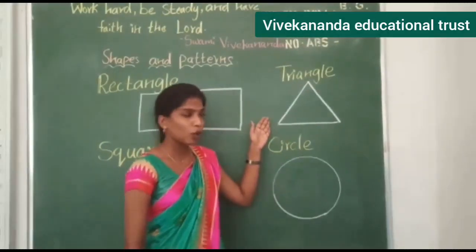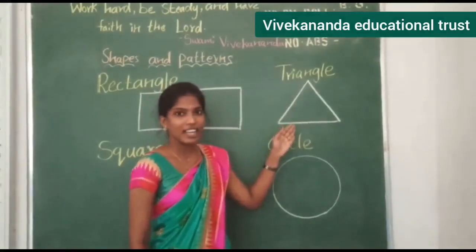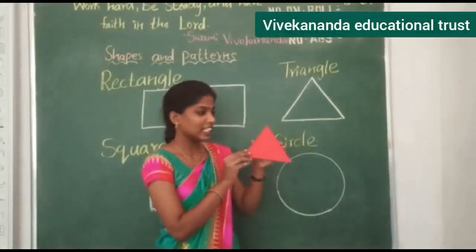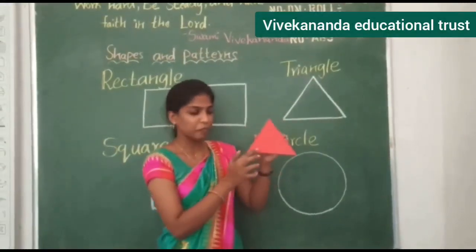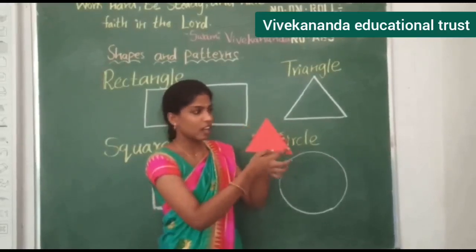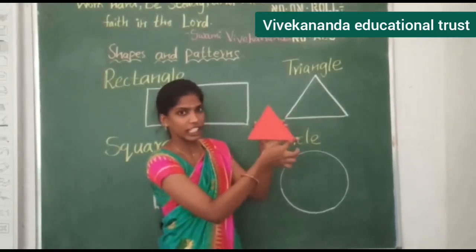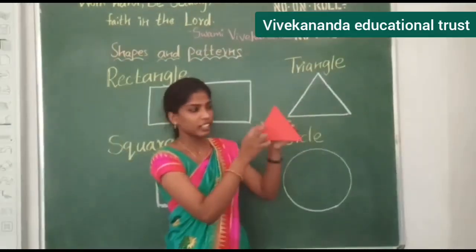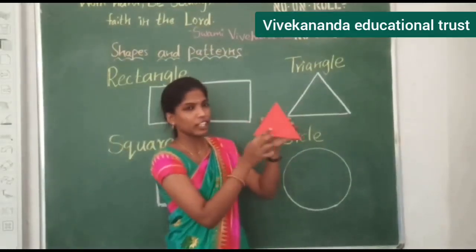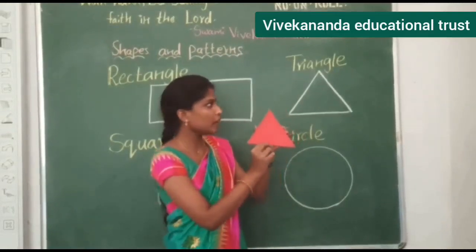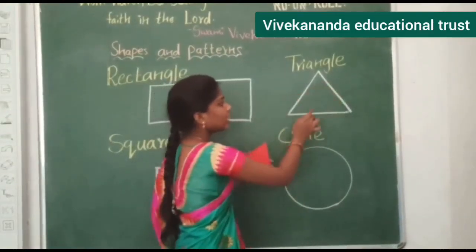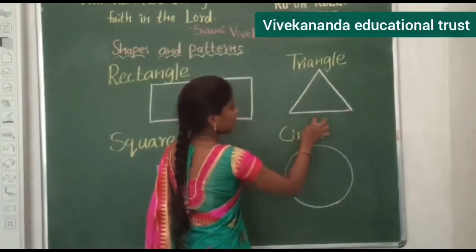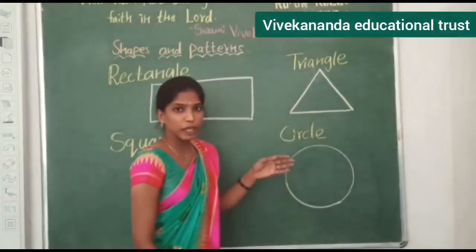What shape is this? Triangle. So this is the triangle. It has three sides and three corners: one, two, three corners and three sides: one, two, three.